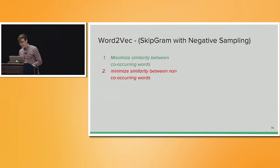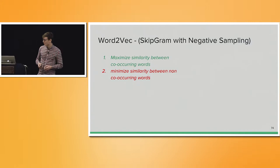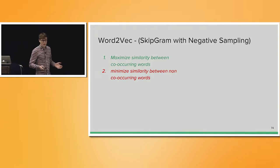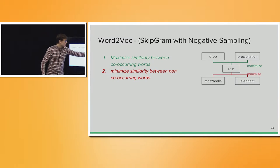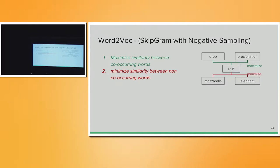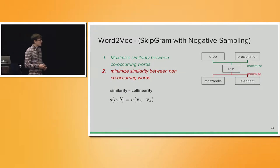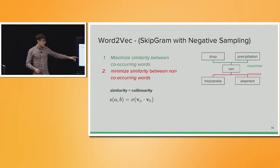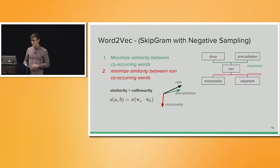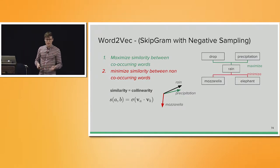The idea behind Word2Vec, also called skip-gram with negative sampling, is that we want to maximize the similarity between co-occurring words while minimizing the similarity between non-co-occurring words. So we want to maximize similarity between rain and drop, or rain and precipitation, but minimize similarity between rain and mozzarella, or rain and elephant. Based on the idea that similarity means collinearity of vectors, two words are similar if their word vectors have a large inner product — the sigmoid of that would be close to one. When training Word2Vec, you take a word like 'rain', look at its local context window, and the goal is to use these word vectors to predict the surrounding words that appear around it.